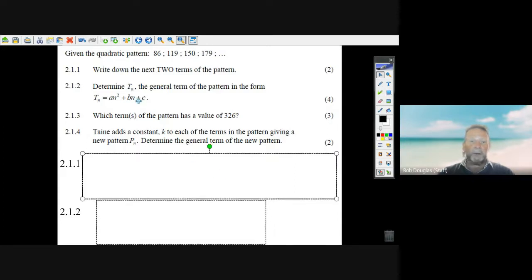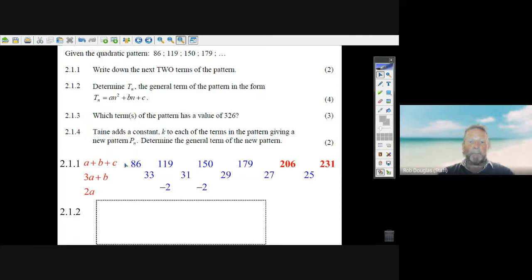Your first job is to lay it out and make that triangle. So you go 86, 119, 151, 179. You just subtract the second term minus the first term, you get 33. Third minus the second is 31, fourth minus the third is 29.